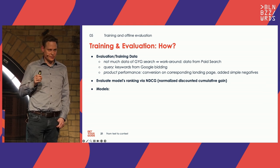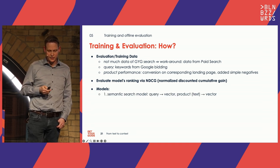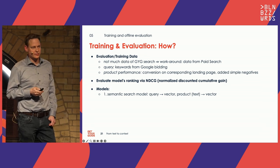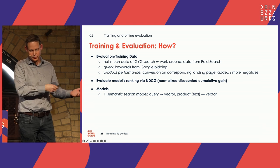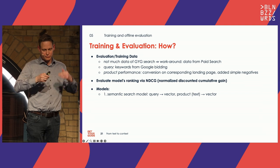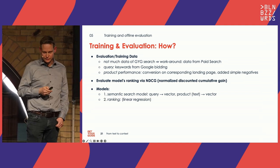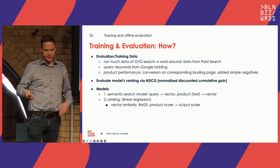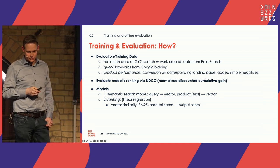We evaluated the model output — the ranking — to decide which model was good enough to proceed. We had to train and evaluate two models: the semantic search model, which converts the query and products into vectors, and the combination model — the linear regression that combines the two scores. We took the vector similarity, BM25 score, and product score and converted them into an output score.